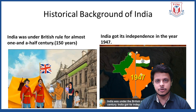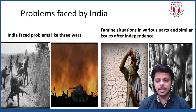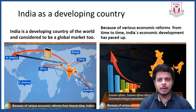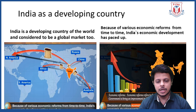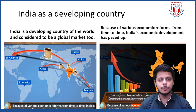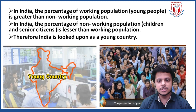Let's understand the historical background of India. India was under British rule for almost one and a half centuries, that is 150 years. India got its independence in the year 1947. India faced problems like three wars and famine situations in various parts after independence. India is a developing country and is considered a global market. Because of various economic reforms, India's economic development has paced up. Economic reforms refers to changes introduced by the government to bring improvement in the economy. In India, the percentage of working population — young people — is greater than the non-working population, such as children and senior citizens. Therefore, India is looked upon as a young country.